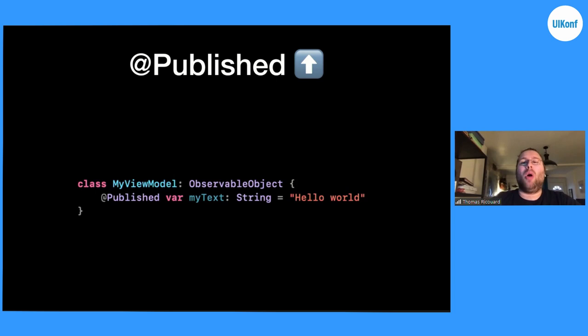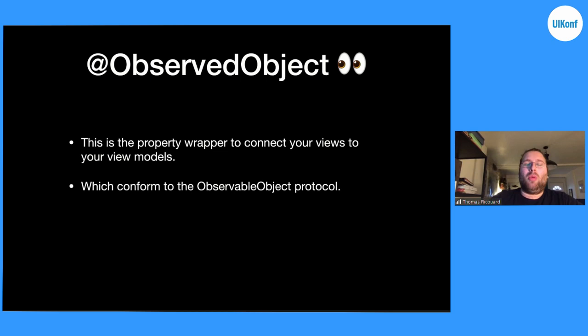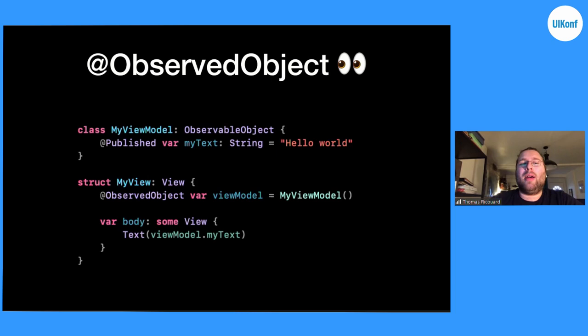Now let's go back to the view model code. This time, instead of calling willSet, we wrap the property into a Published property wrapper. To make SwiftUI listen to our changes, we use one more property wrapper called ObservedObject. This allows you to connect your view to your view model. Any class conforming to ObservableObject can be wrapped into ObservedObject, which tells SwiftUI to subscribe to Published properties within that view model. In the example, in MyView we create a new view model wrapped into ObservedObject. In the body, we reference viewModel.myText, and whenever myText is updated — from anywhere in the app — the text in MyView will be updated to reflect the new value.